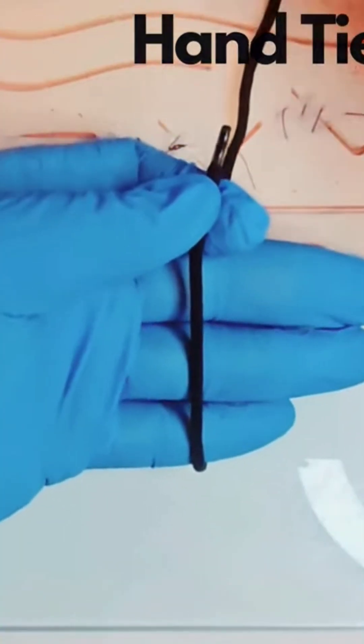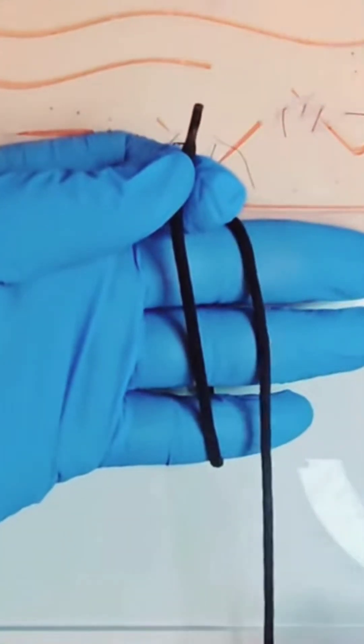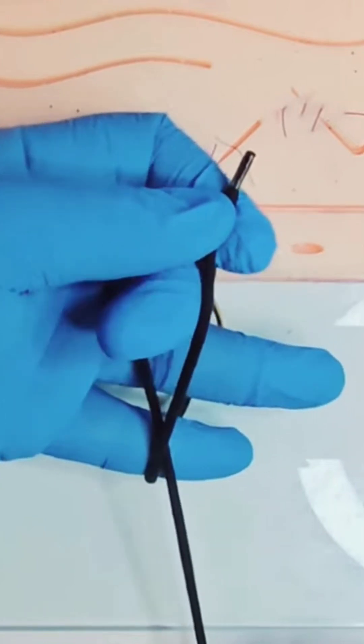Using your right hand, run the long thread down your palm parallel to the short thread. Flex your middle finger over the long thread and push the short thread under it.